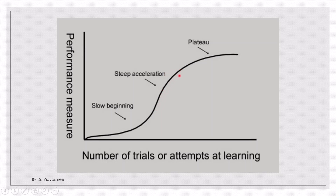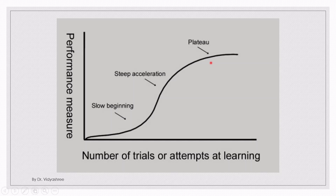When he starts doing the work repetitively, performance increases further and the curve is steep. Then, as he becomes a master or gains proficiency, he reaches a stage called plateau. Plateau is very flat — there is no much scope for further learning because he has already mastered it. He will not put much effort to learn further, so this stage is called plateau.